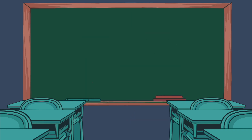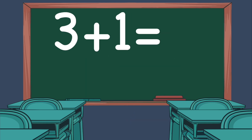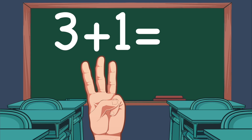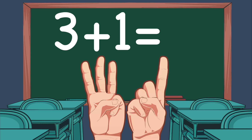Here's another example: 3 plus 1. On our left hand, we show 3 fingers. On the right hand, we have 1 finger. Let's count the total number of fingers: 1, 2, 3, 4. So 3 plus 1 equals 4.